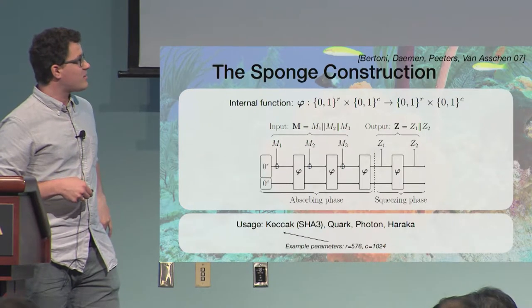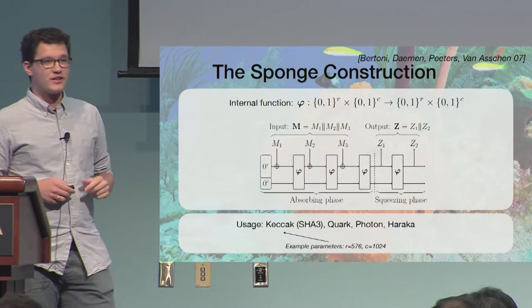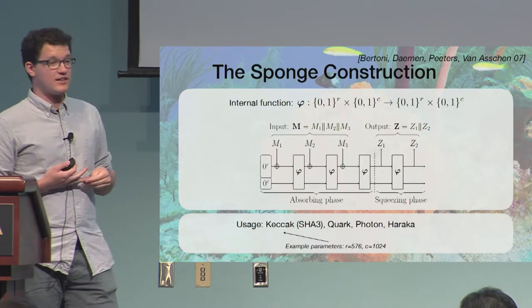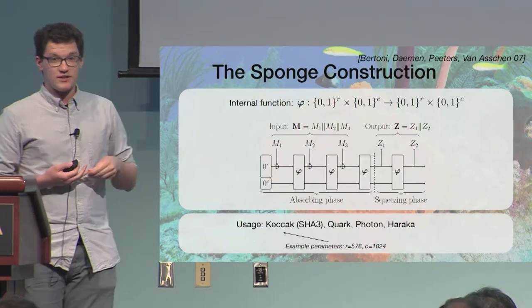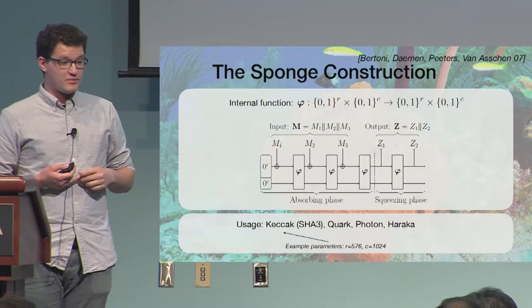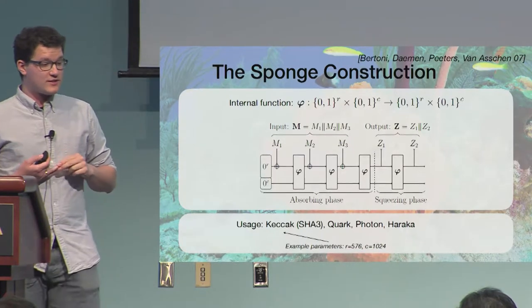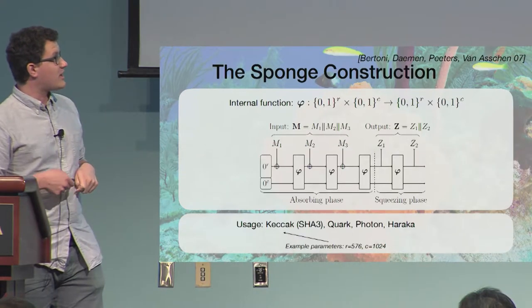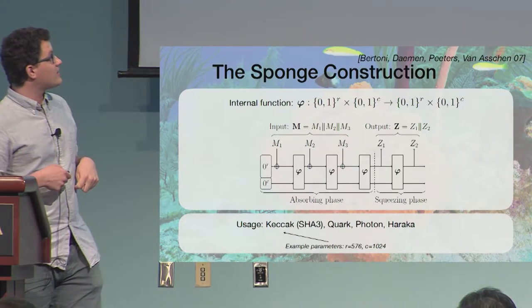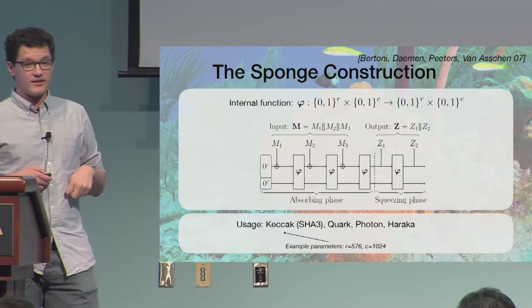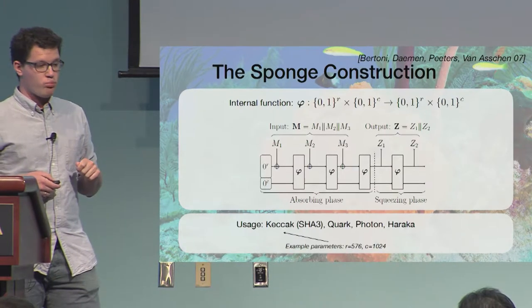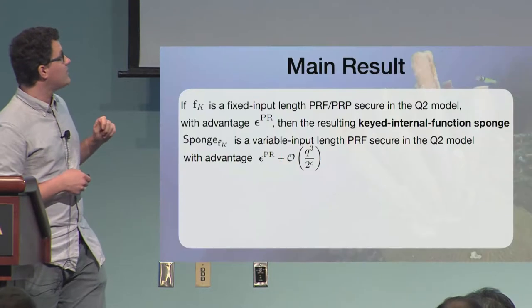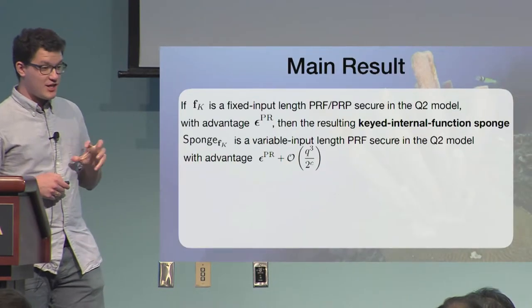So the most prominent use of this construction is in KECCAK, so the standardized hash function SHA-3, and others. And some of the use that is closest to our approach or our result is the Haraka function used in the hash-based signature scheme Sphinx Plus. I point this out because Haraka uses this construction with phi being the KECCAK function.